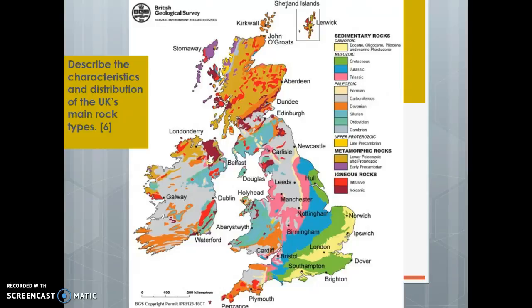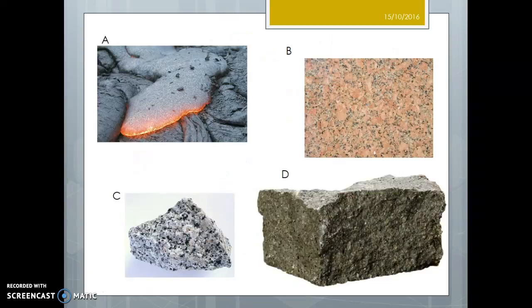By the end of this PowerPoint, you should be able to describe the characteristics and distribution of the UK's main rock types. Important to note, we've got two questions in that one: describe the characteristics of the UK's main rock types - what they're like, most importantly how hard they are, how resistant they are to erosion - and distribution, where they occur.